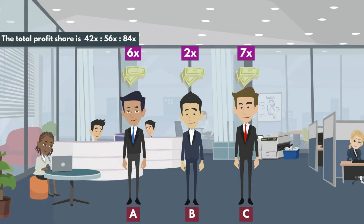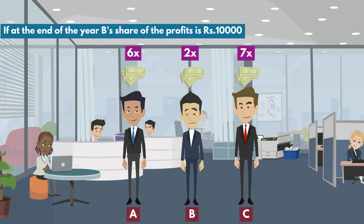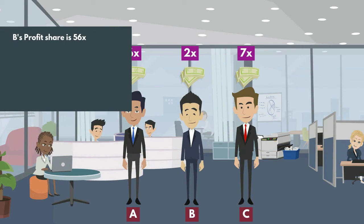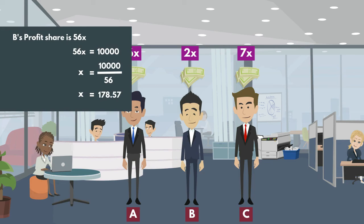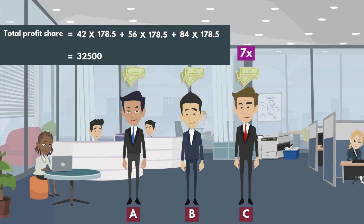The total profit share ratio is 42x : 56x : 84x. Since B's profit share is Rs. 10,000, and B's share corresponds to 56x, we get 56x = 10,000, so x = 178.57. Therefore, total profit = 42×178.57 + 56×178.57 + 84×178.57 = Rs. 32,500.